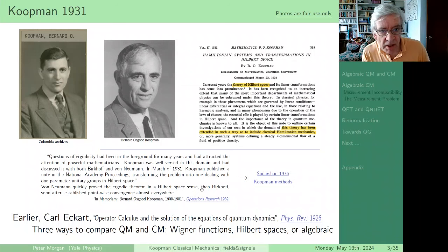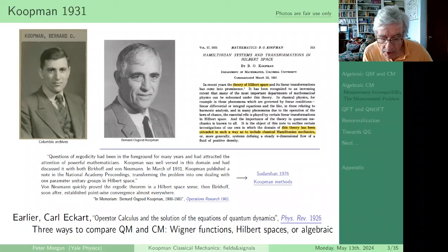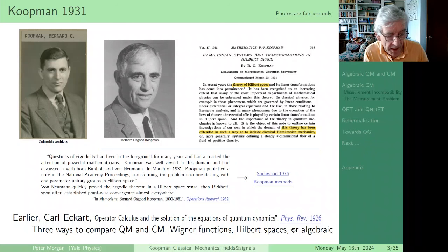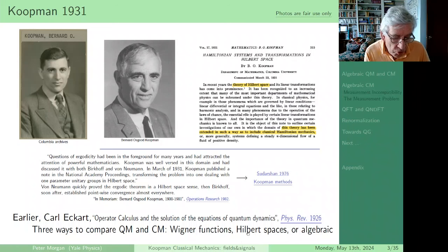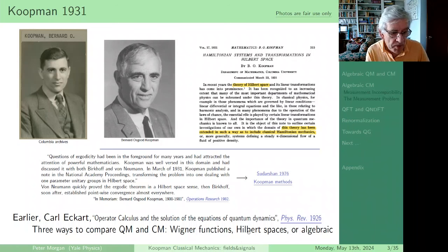Even earlier than 1931, Carl Eckhardt had suggested that we could use an algebraic operator calculus as a formalism for classical mechanics, published in Physical Review. So that gives us three ways to compare quantum mechanics and classical mechanics: Wigner functions and the Moyal product on phase space as a shared formalism; Koopman and ordinary quantum mechanics with a shared Hilbert Space Formalism; or everything in a shared algebraic formalism.